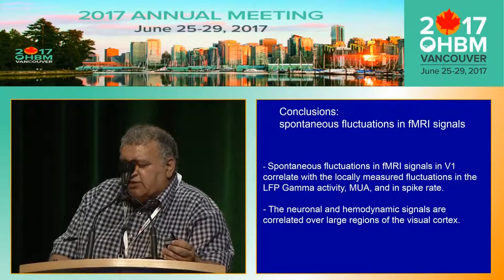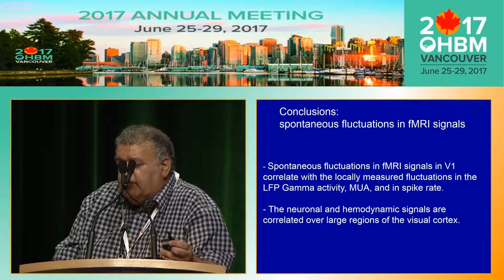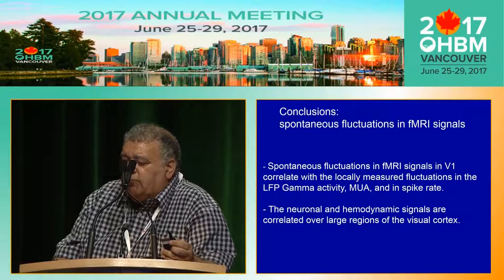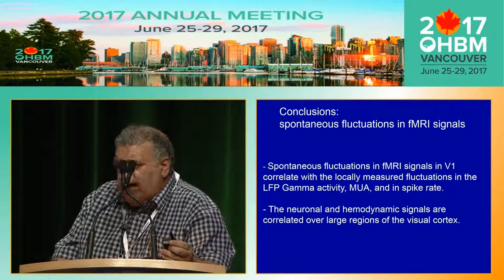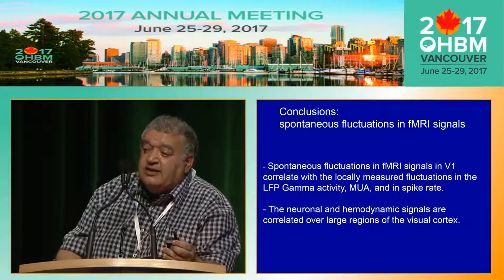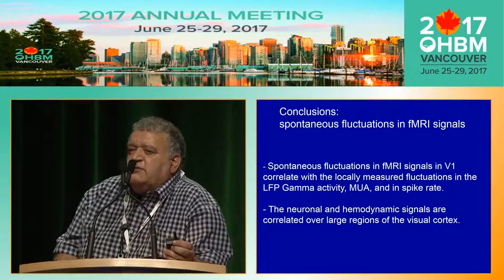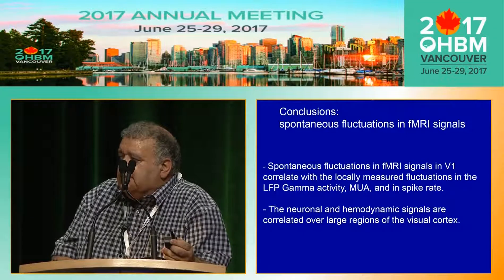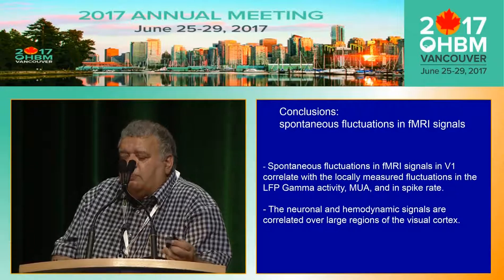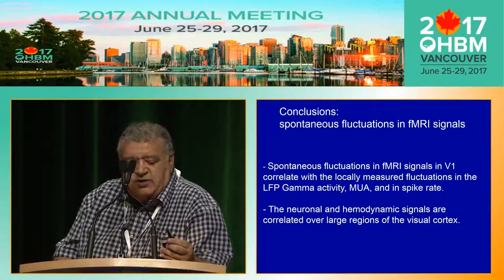Spontaneous fluctuations in fMRI signals in V1 correlate with locally measured fluctuations in local field potential gamma activity, multi-unit activity, and spike rate. The neuronal and hemodynamic signals are correlated over large regions of the visual cortex and even extend to parietal cortex, consistent with what we know about long-range functional correlations in resting state in humans. Recent studies also show that very slow fluctuations in membrane potential at the timescale of resting state fMRI contribute additionally to fMRI fluctuations.